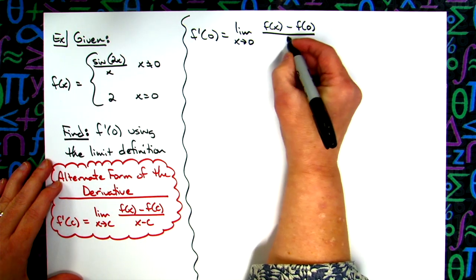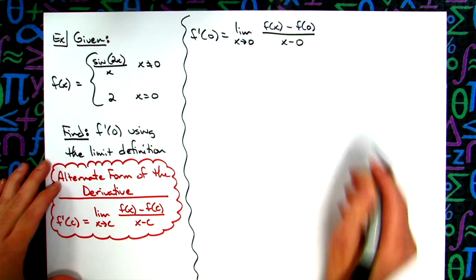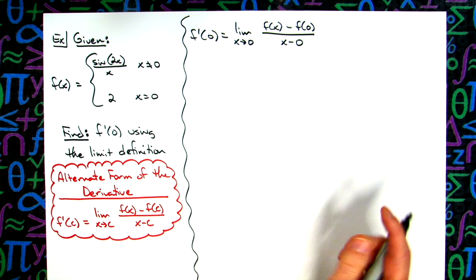And then we'll have x minus 0 here, implementing this alternate form of the derivative.